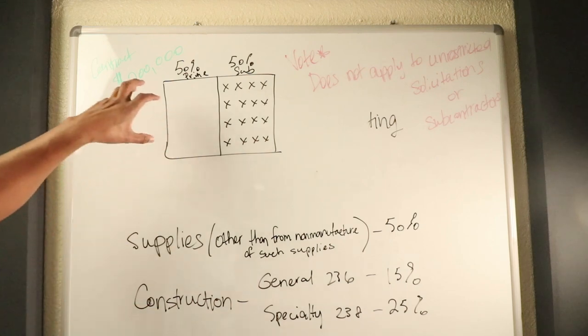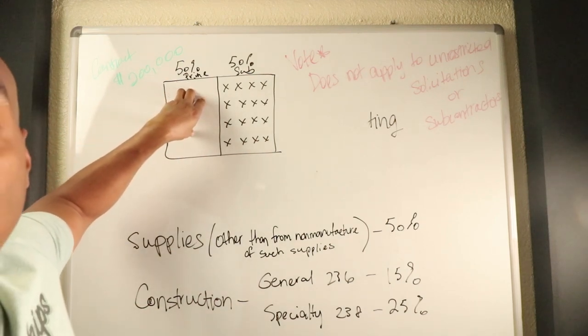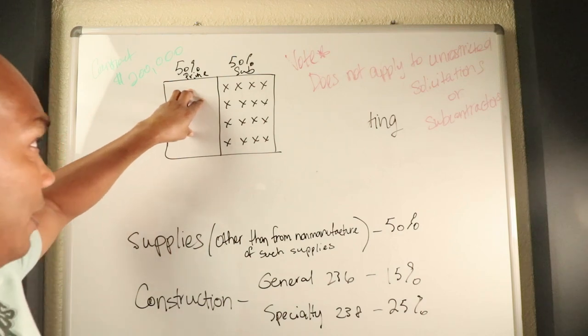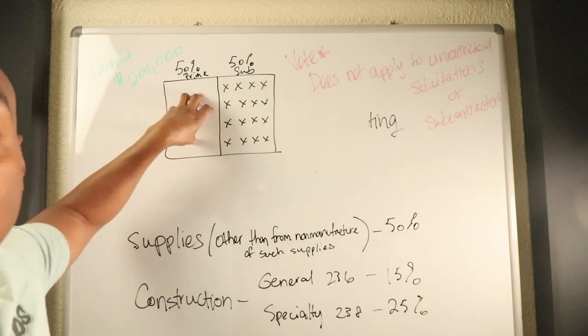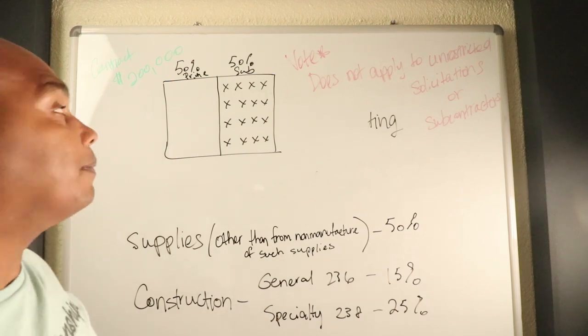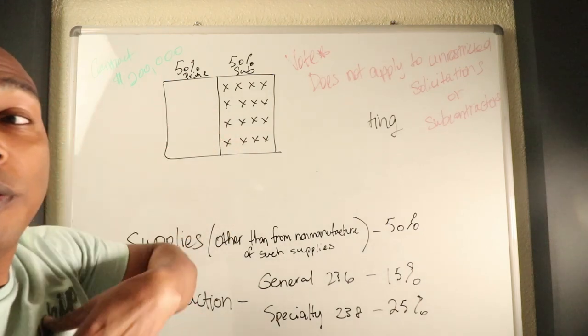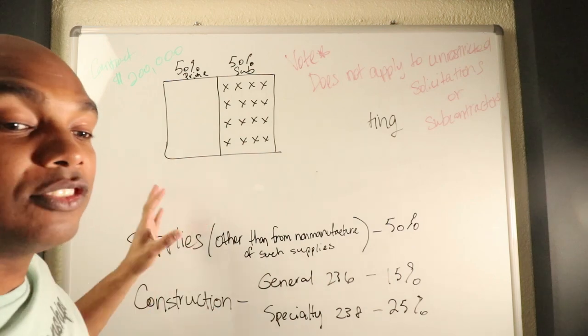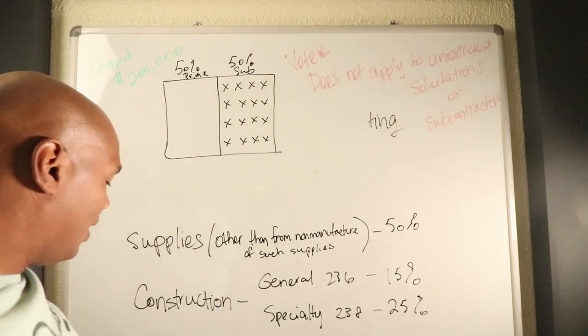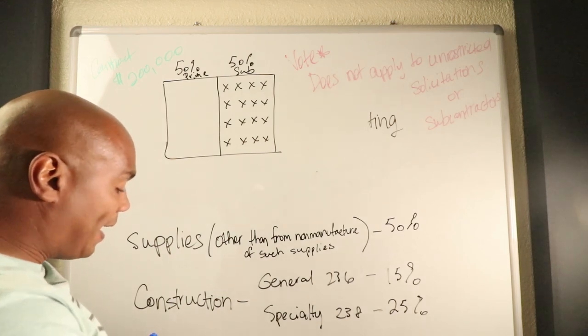You're the prime, you're just getting started. You're a women-owned business, you're an 8a, your hub zone, whatever the case may be. You're like Eric, but I've got a company, they're gonna do everything for me. I don't have to do anything. Okay, perfect. However, because of the regulations and the rules, you have to perform 50% of the work.